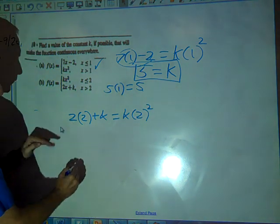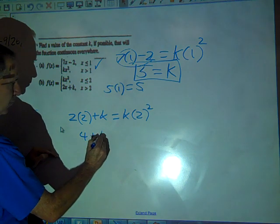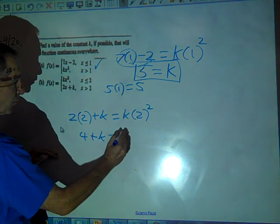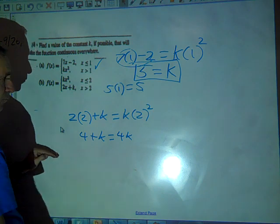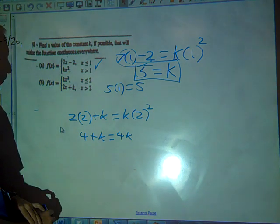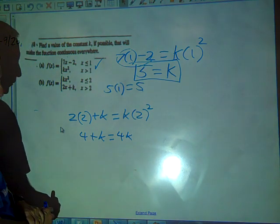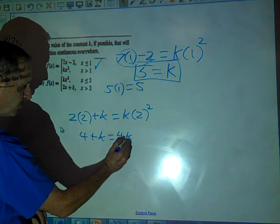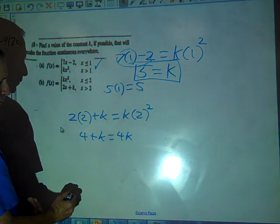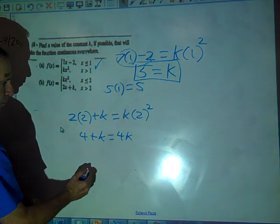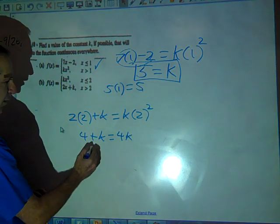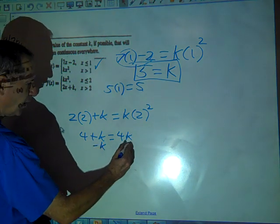So we have 4 plus k equals 4k, right? All right, what's going to be our next step to solve for this? Subtract k. Subtract k. Yes, subtract k. I think that's probably the most efficient way.